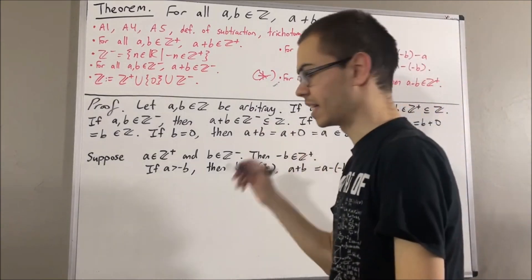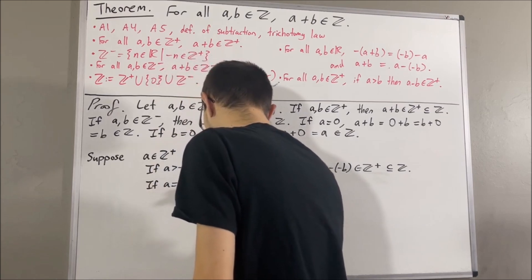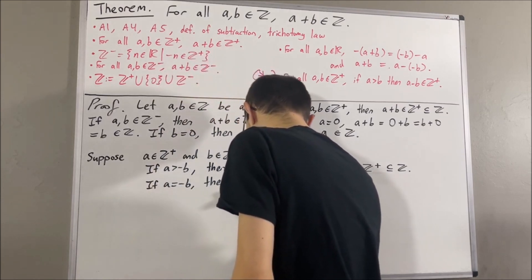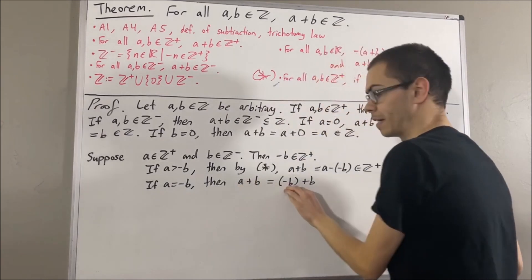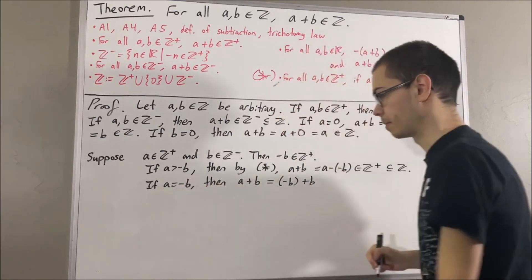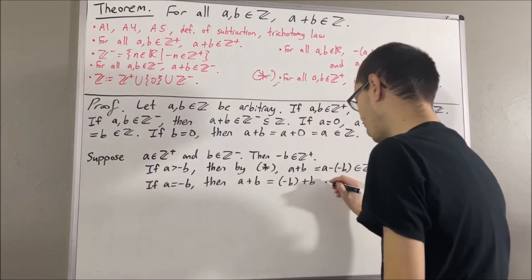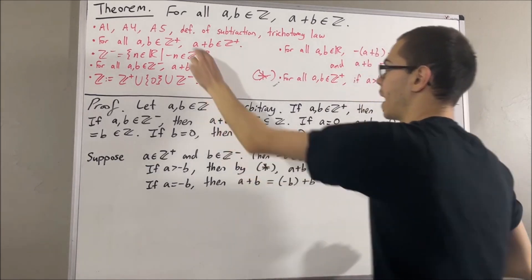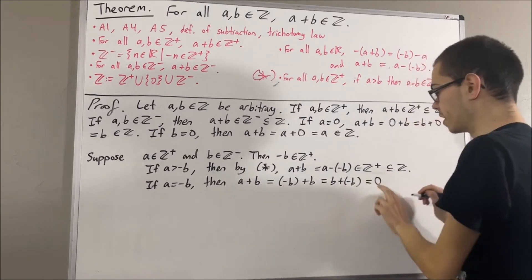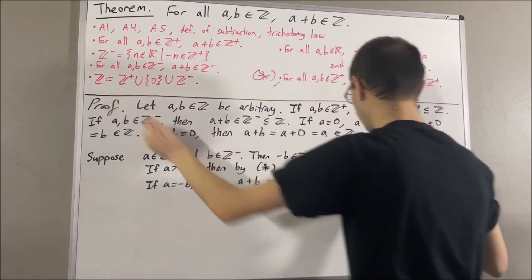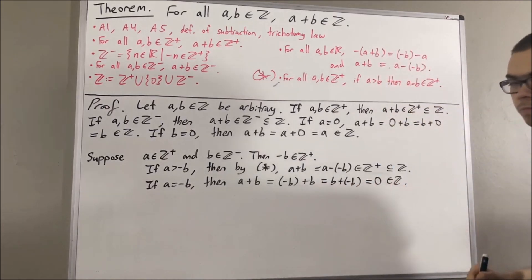Now let's consider the case a is equal to the negative of b. Then a plus b equals the negative of b plus b. By axiom 1 we can swap these, and by axiom 5, b plus the negative of b equals zero. And zero is an integer, so a plus b is an integer.